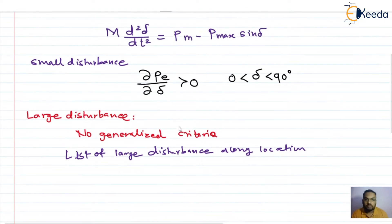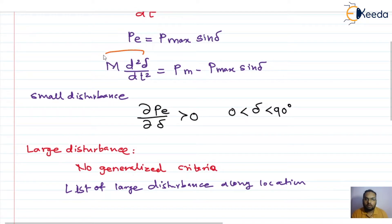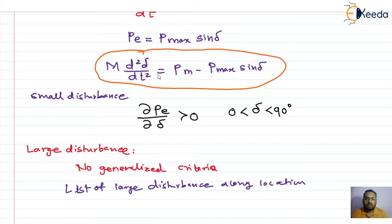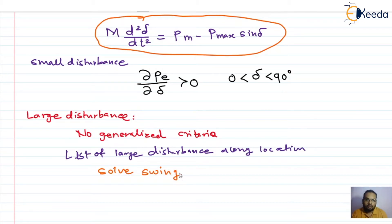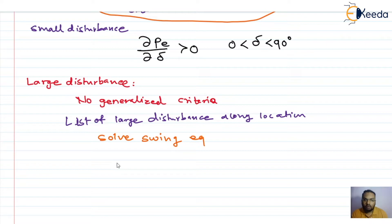Once you have the list, the next step is to solve the swing equation, which is a nonlinear differential equation, for a particular disturbance. Take any disturbance from the list and for that condition solve the swing equation. You have to take the help of a numerical technique to solve this nonlinear differential equation. After solving, a graph of rotor angle versus time — the swing curve — is plotted.